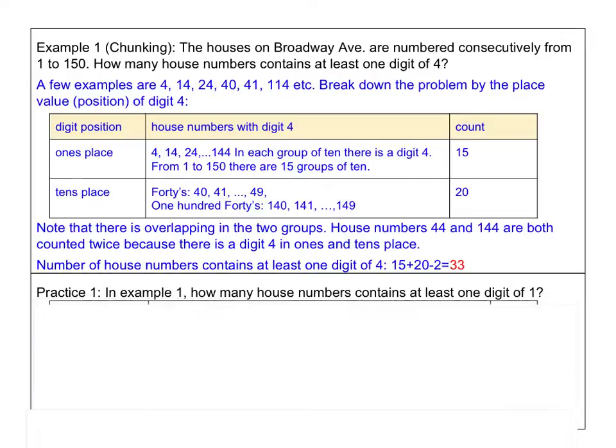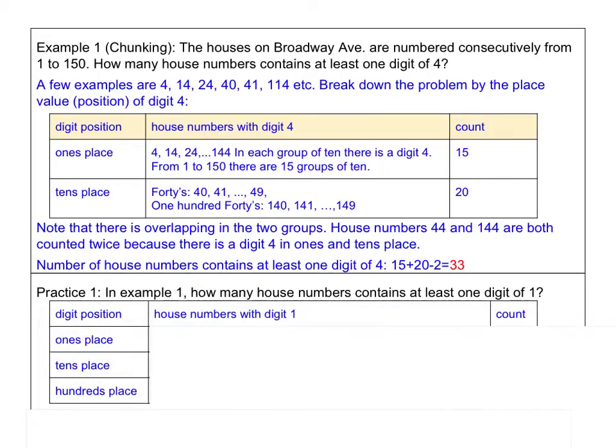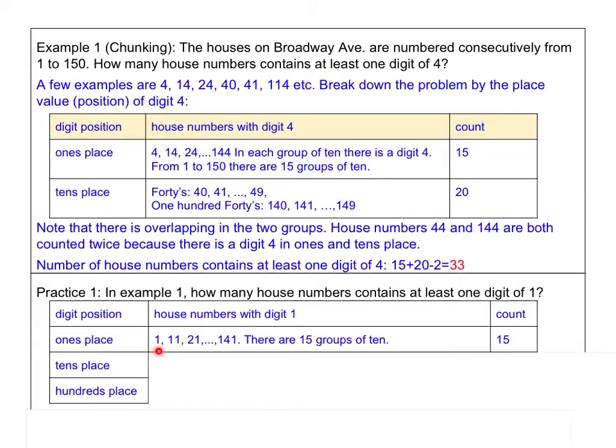Okay, so this is how we will solve it. Again, we use a table to help us out. We learn how to use table to list things in our last chapter. We will also list the digit position. Now note that this time, besides ones place, tens place, we also have the hundreds place to consider because we are having the numbers from 1 to 150. So the 1 can also appear in the hundreds place. So now I have three rows to help me keep track of such house numbers and use the same way that we did the last example. House numbers with digit 1. I have 1, 11, 21, 31, and so on, all the way to the last group of 10, which is 141. Again, I will count 15 ones in those numbers.